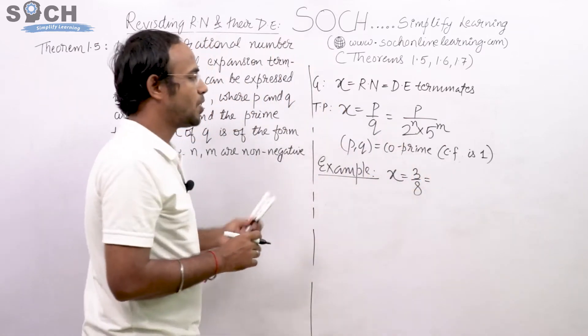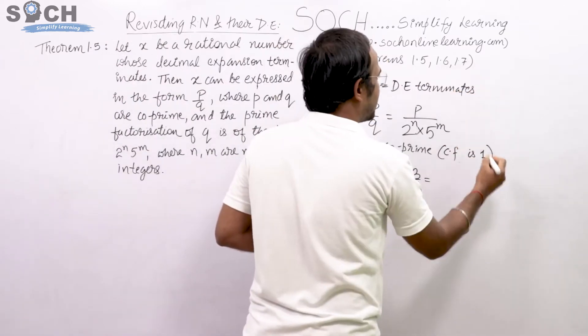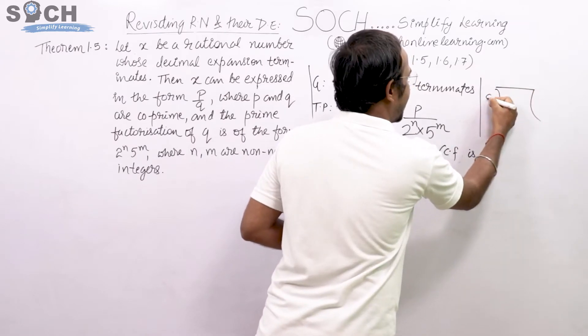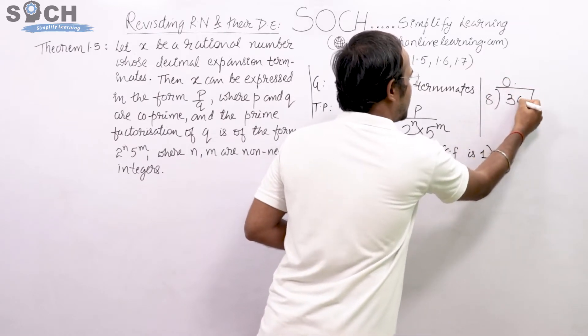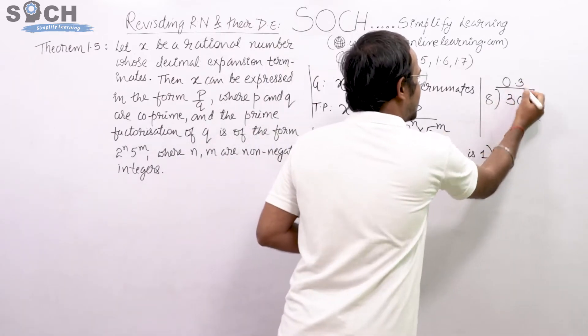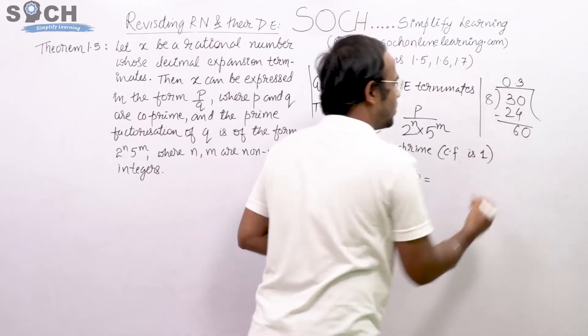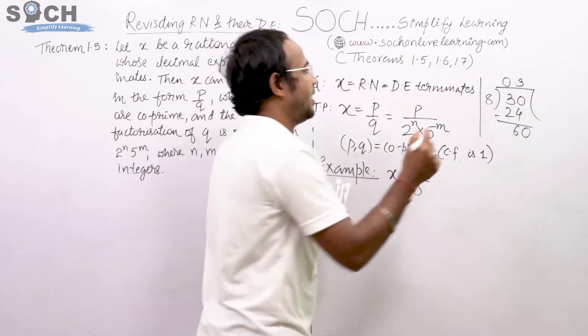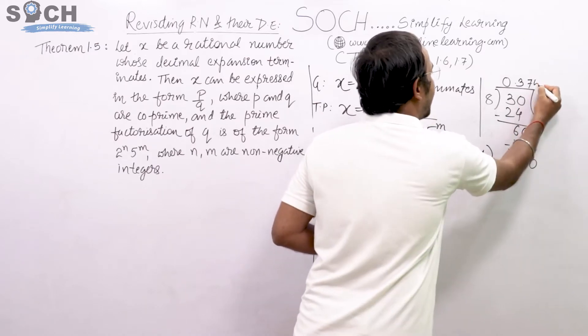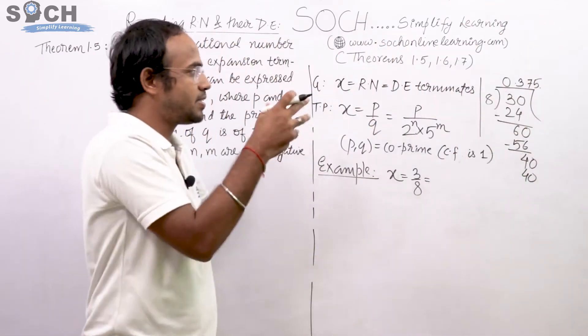Why did I take 3 by 8? Because if I divide 3 by 8, if I just simply divide 3 by 8, this is 8 and this is 3, 0.0, 8 threes are 24, then what is left is 6, 0. Then 8 sevens are 56, then 4, 0, 8 fives are 40.